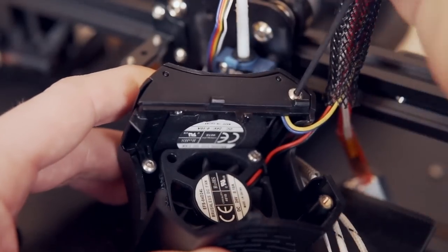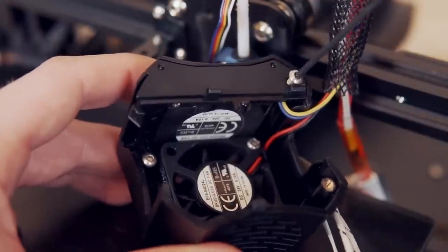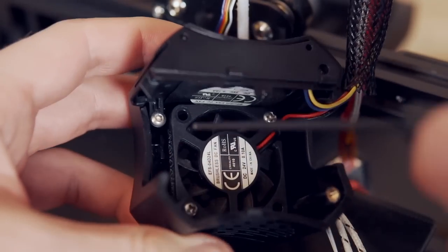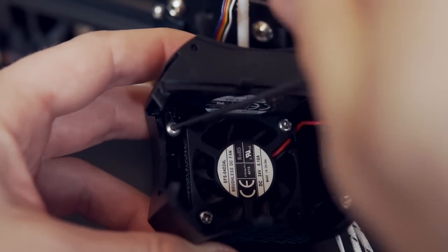Now it's time to remove the fan shroud. There are two screws holding it in place, one sort of on the outside more so and the other one is a bit more hidden on the inside beneath the heat sink blower fan. We'll be using these in just a second so make sure you hold on to them.